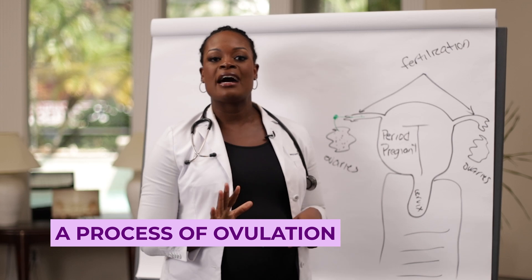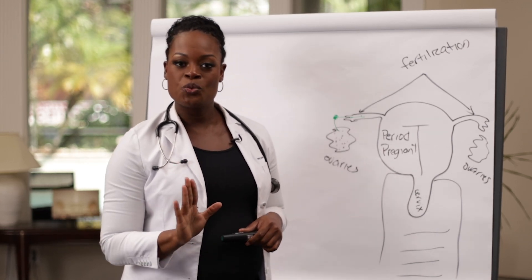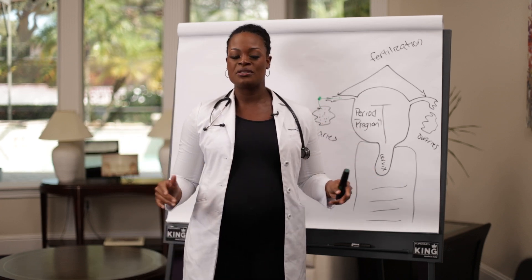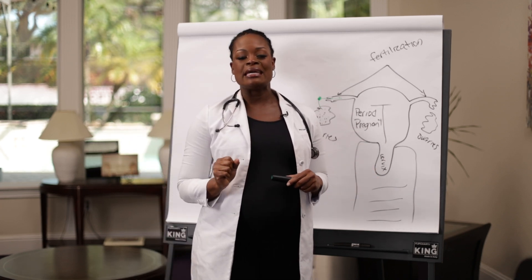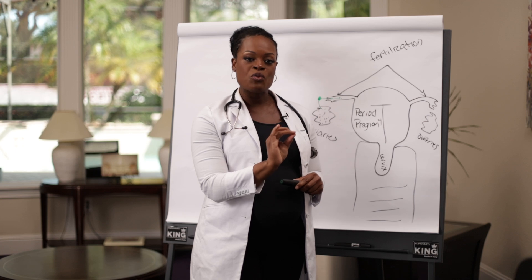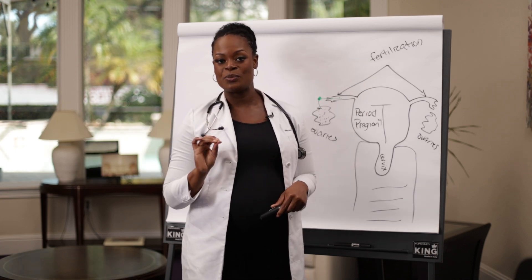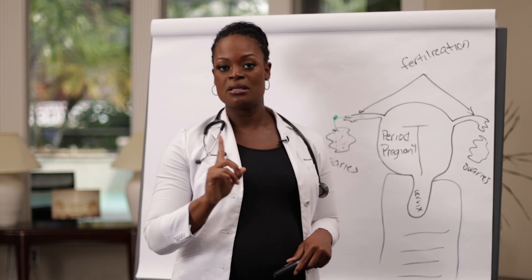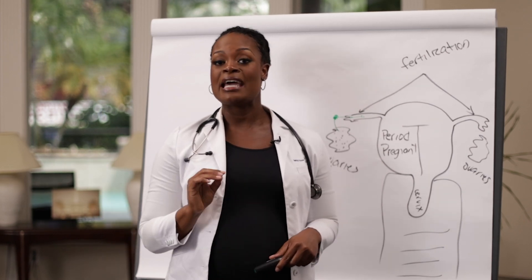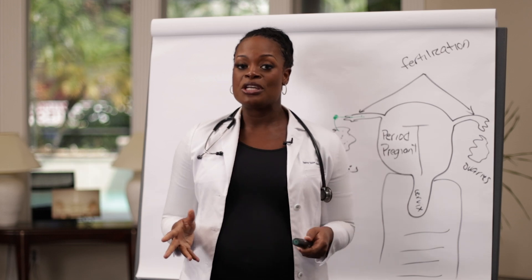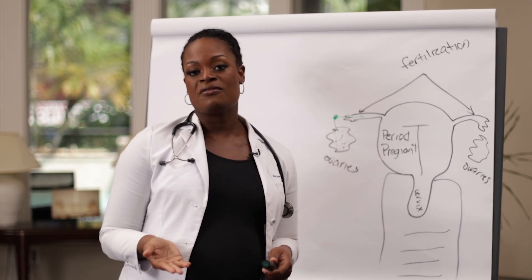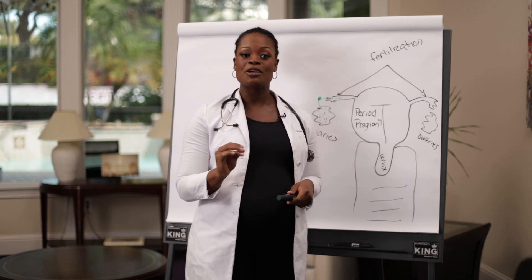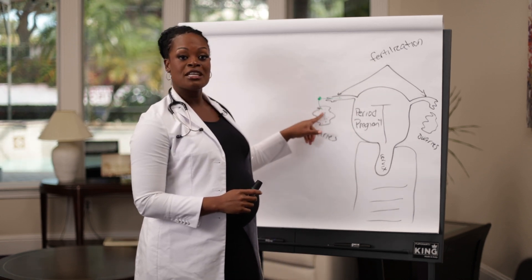Eggs survive inside of the fallopian tube for about 24 hours in total. The menstrual cycle is really the beginning of one period to the beginning of the next period, and you count all the days in between. On average, that would be somewhere between 21 and 35 days. We know that ovulation occurs 14 days before the next cycle.